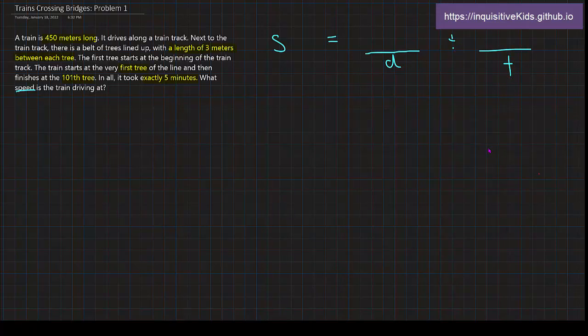So first, where can we get the distance? From our last video, we learned that the distance is equal to the train plus the bridge. So that would be our distance right here that the train is going.